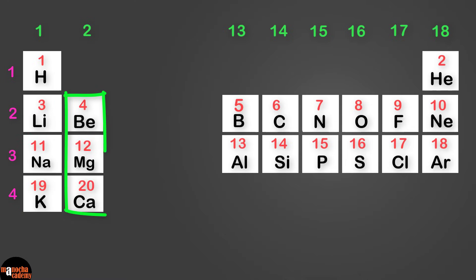If you look at group 1, except for hydrogen, all the elements in group 1 are metals. They are called alkali metals and they have similar chemical properties. They have the same valency 1.